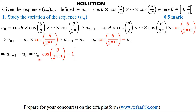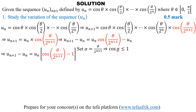Now we need to determine the sign of this expression. If I set alpha to be theta on 2 to the N+1, we know the cosine of any angle is always less than or equal to 1 — the maximum value of cosine of any angle is 1, achieved when that angle is an even multiple of pi. So since cosine of alpha is less than or equal to 1, subtracting 1 on both sides gives cosine of alpha minus 1 is less than or equal to 0.